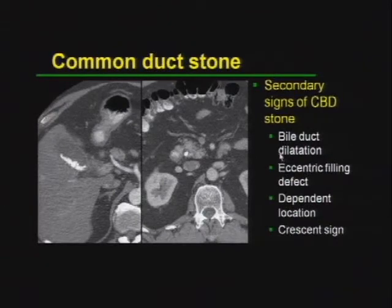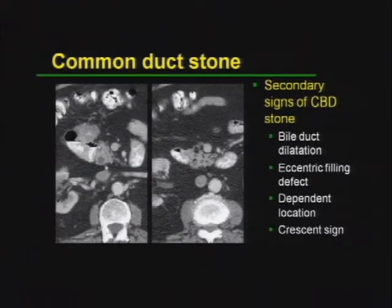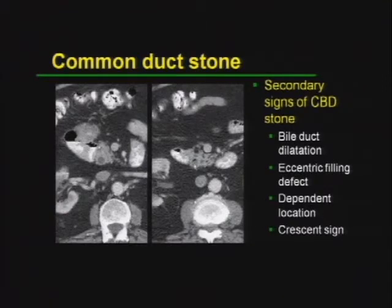When we see stones in the common bile duct, it's useful to think about secondary signs. We will think about bile duct dilatation, but up to half of common bile duct stones will occur in a duct that is not dilated at the time of imaging. They're often eccentric filling defects in a dependent location, and when they're calcified, they're very easy to pick up on CT. Cases frequently show a non-dilated common bile duct where we don't see a stone because cholesterol often looks the same color as bile on CT. When we look at secondary signs — a crescentic area of gas and a filling defect in a dependent location — even in the absence of bile duct dilatation, we can suggest there might be a stone in the common bile duct and obtain an MRCP.